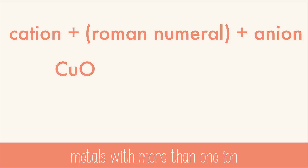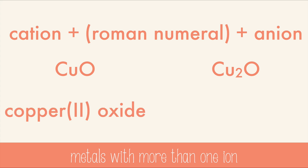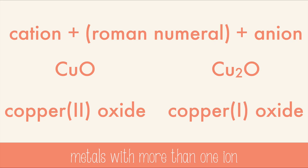So here we have CuO and Cu₂O. The first one uses the copper two ion, so this is called copper two oxide. The second uses the copper one ion, so it's called copper one oxide. You can tell which cation is used from the anion in the formula. Oxide ion always has a two minus charge, so the first copper must have been a two plus to balance out the two minus, and the second was a one plus, so there needed to be two of them.